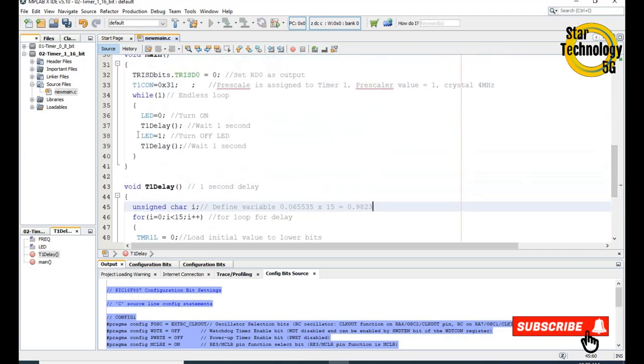After that, we will turn off the LED and again call the timer1 delay, which gives us 1 second delay. After that, it will repeat this code again and again, and it will look like the LED is flashing with a delay of 1 second.